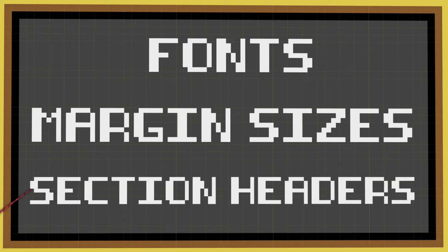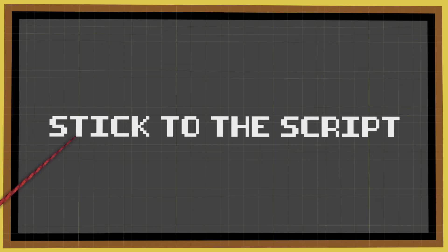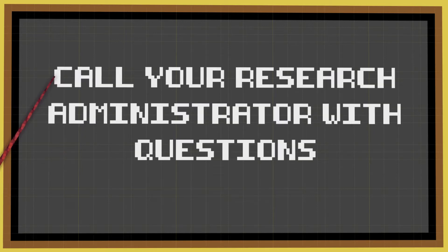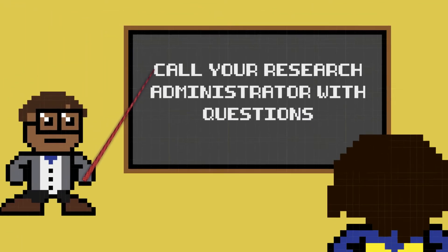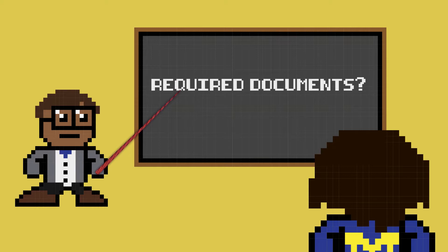They may also detail things that should not appear in your budget or proposal. The guidelines can be very specific, so stick to the script. Sponsors may not even read your proposal if the guidelines are not followed, so while you develop your proposal, partner with your research administrator and reach out with questions or when you need clarification.